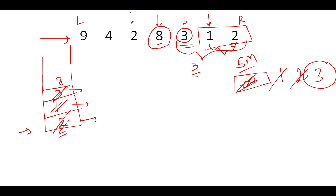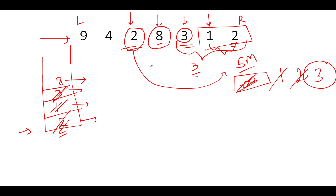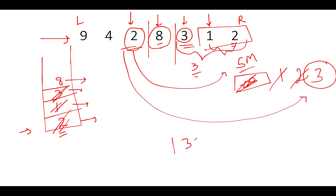Now comes the most interesting case. The next element is 2. We check the topmost element of the stack, which is 8. Since 8 is greater than 2, we do not pop. Instead, we compare the current element 2 with the sm value, which is 3. Since 2 is less than 3, we have identified the lower value towards the left of 8 that is also less than the second max. Therefore, we have successfully identified the 132 pattern.